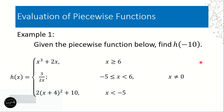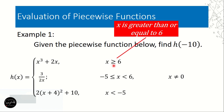Example number one: given the piecewise function below, find h of negative 10. So our value of x is negative 10. We have three functions: x cubed plus 2x, 3 over 2x, and 2 times the quantity x plus 4 squared plus 10. The first condition is x is greater than or equal to 6. Since negative 10 is not greater than or equal to 6, we will not use x cubed plus 2x.